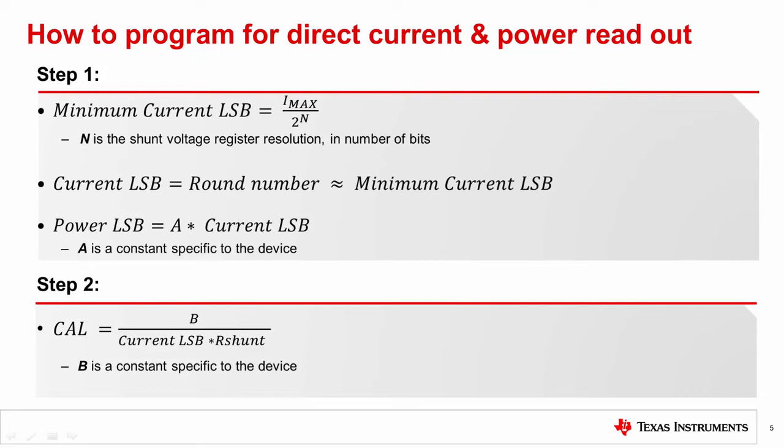Please refer to the datasheet for a particular digital power monitor to find out what the constants n, A, and B are for that device. For example, in the INA233, n is equal to 15, A is equal to 25, and B is equal to 0.00512.